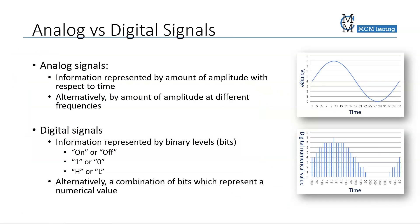Analog signals carry information in the form of amplitude with respect to time. For example, a sine wave could represent temperature — the high amplitude representing high temperature and the low amplitude representing low temperature. Alternatively, information can be encoded in frequency, as with FM radio, where different frequencies carry the signal.